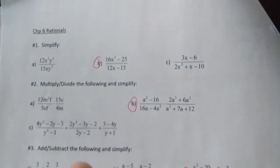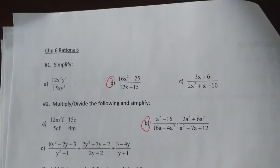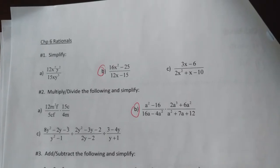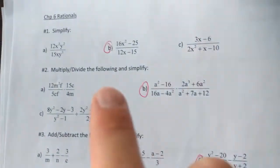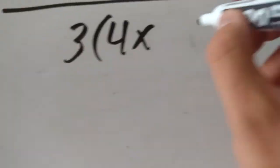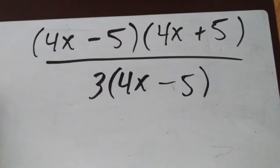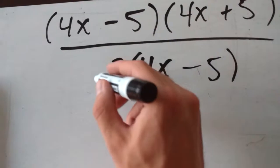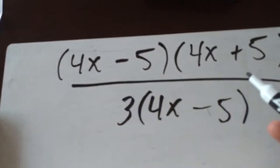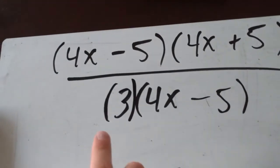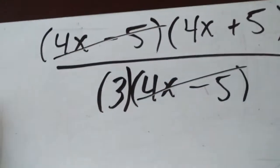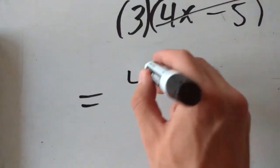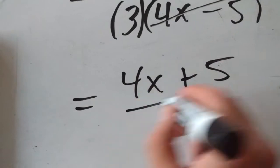Now for the denominator, 12x minus 15 is not a difference of squares. But we can factor a 3 out of both terms: 3 out of 12x gives 4x, and 3 out of minus 15 gives minus 5. So we have 3 times (4x minus 5) on the bottom, and (4x minus 5)(4x plus 5) on the top. The (4x minus 5) cancels, leaving us with (4x plus 5) divided by 3.